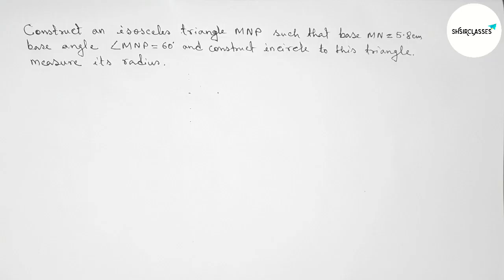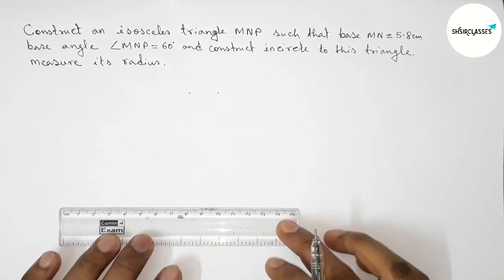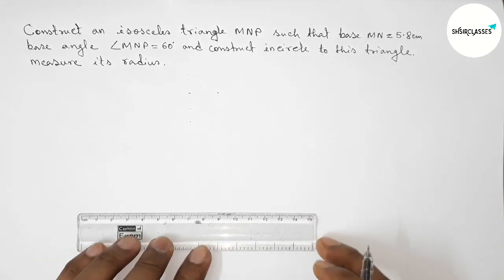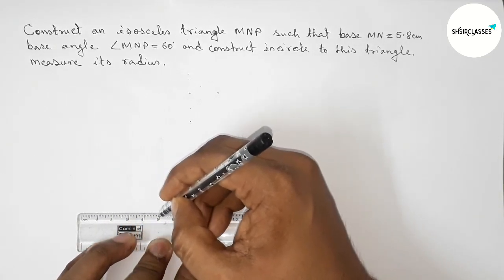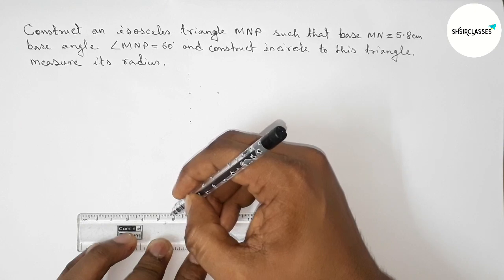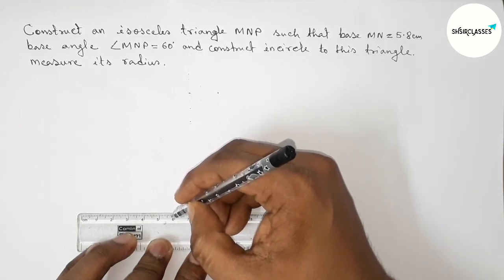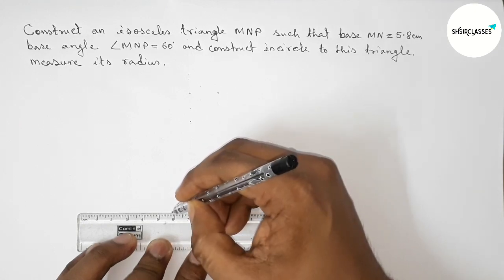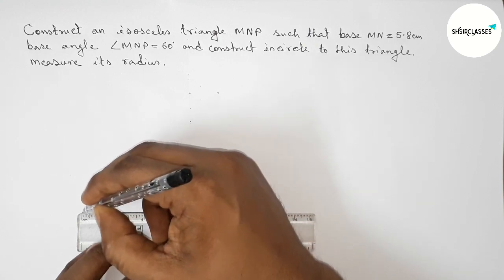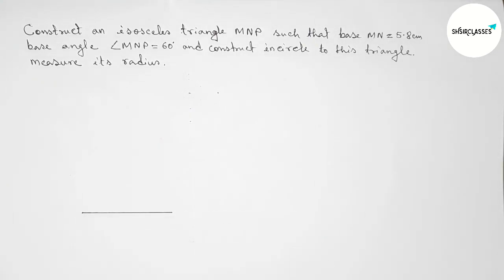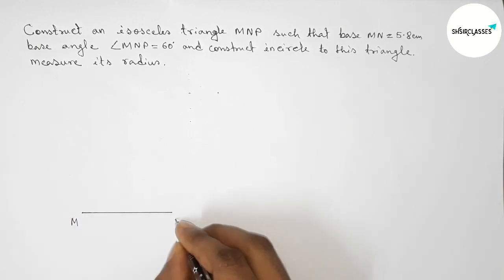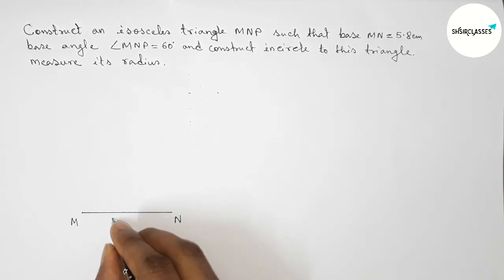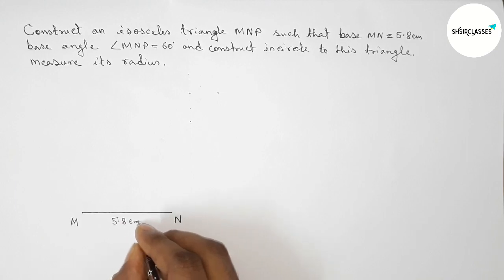First of all, let us draw the given base MN equals to 5.8 centimeters. This is a 5.8 centimeter line segment. Taking point M here and point N here, so MN equals to 5.8 centimeters.